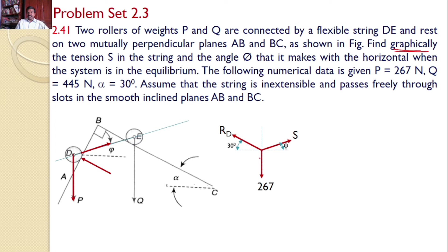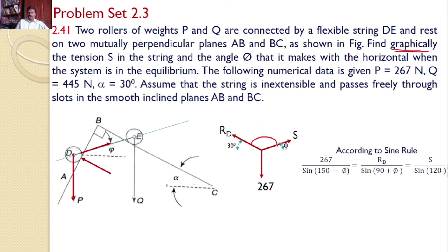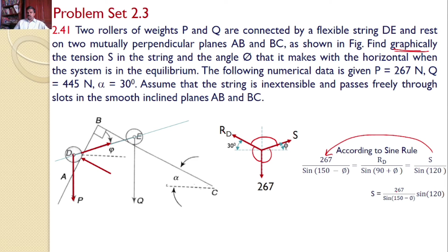With three forces I can apply the sine rule. According to the sine rule: 267 divided by sine of (150 minus phi) equals Rd divided by sine (90 plus phi), and equals S divided by sine 120. Taking the relevant expressions, S is equal to 267 divided by sine(150 minus phi), multiplied by sine 120, giving S equal to 231.23 divided by sine(150 minus phi). Similarly, Rd is equal to 267 divided by sine(150 minus phi), multiplied by sine(90 plus phi).